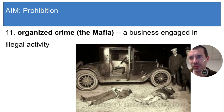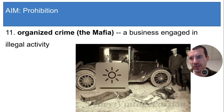In order to get ahead, criminal organizations used violence to get rid of their competitors. In a legal business, companies use tactics like advertising to get an advantage over competitors. But bootleggers can't advertise because what they're doing is illegal and they'll go to jail. So instead, they used violence to get rid of the competition.